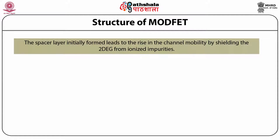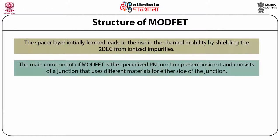Regarding the electrical contacts, two ohmic contacts are provided on the surface of the source and the drain, and a Schottky gate contact is used to modulate the current flow between these two ohmic contacts. Major refinements of ModFET following its invention have centered around improving the electron transport properties. Many studies have been done on n-type ModFET devices, and the main component of ModFET is the specialized p-n junction present inside it, which consists of a junction that uses different materials for either side of the junction.